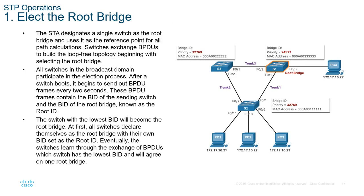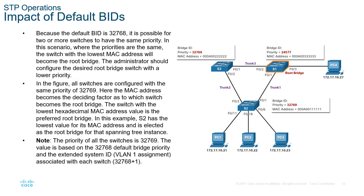Whoever has the lowest number will become the root bridge. The STA will designate a single switch as the root bridge and use it as a reference point. In this example, even though switch 2 has the lowest MAC addresses, it will look at priority first — priority, extended IDs, then MAC addresses. Here we have a modified priority of 24577, which is the lowest priority, so S1 becomes the root bridge because it has the lowest BID. It will then designate ports accordingly. If everything is left at defaults, it will look at extended IDs, then MAC addresses.